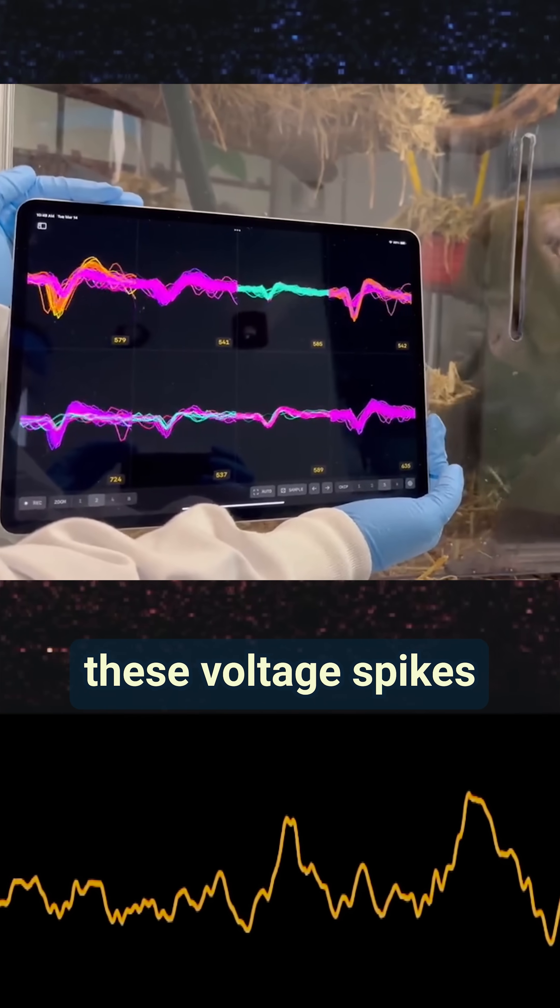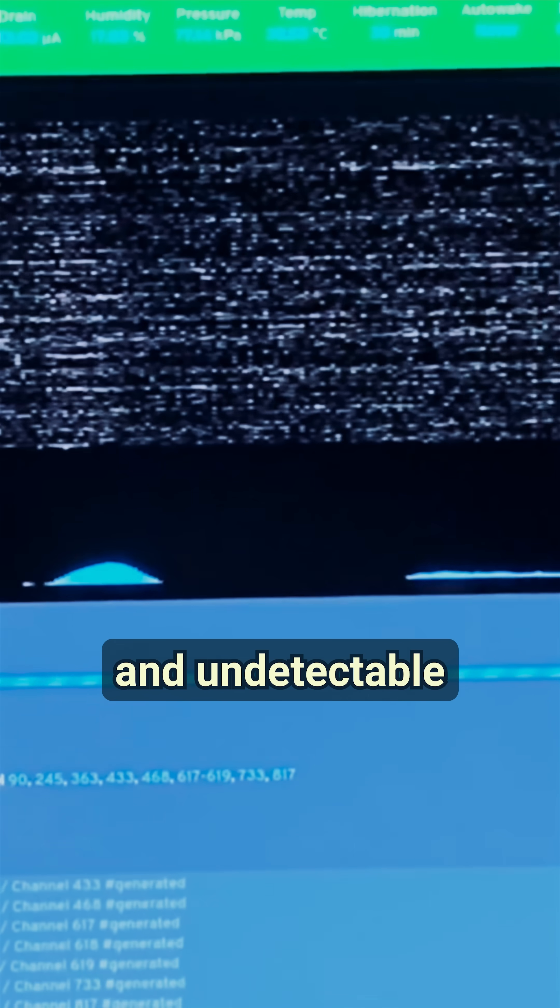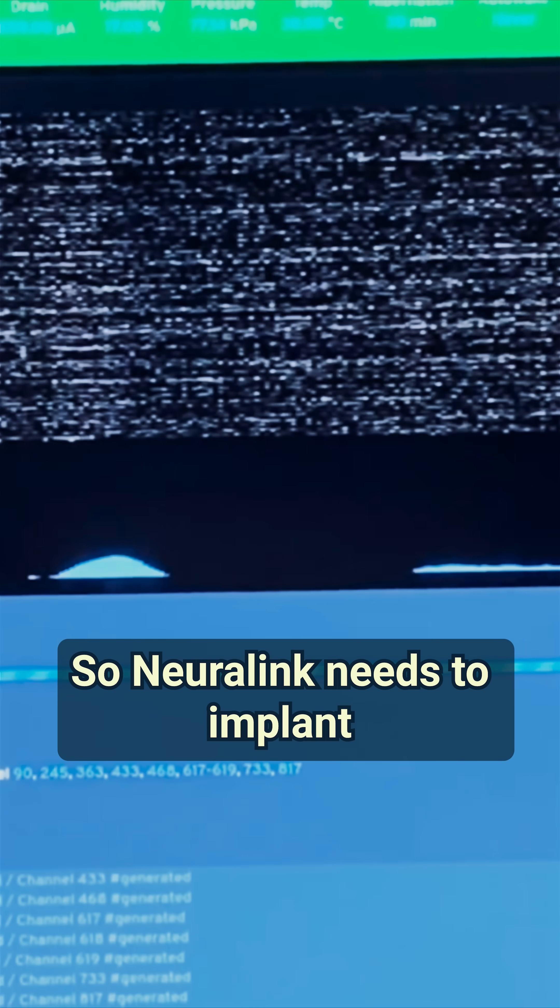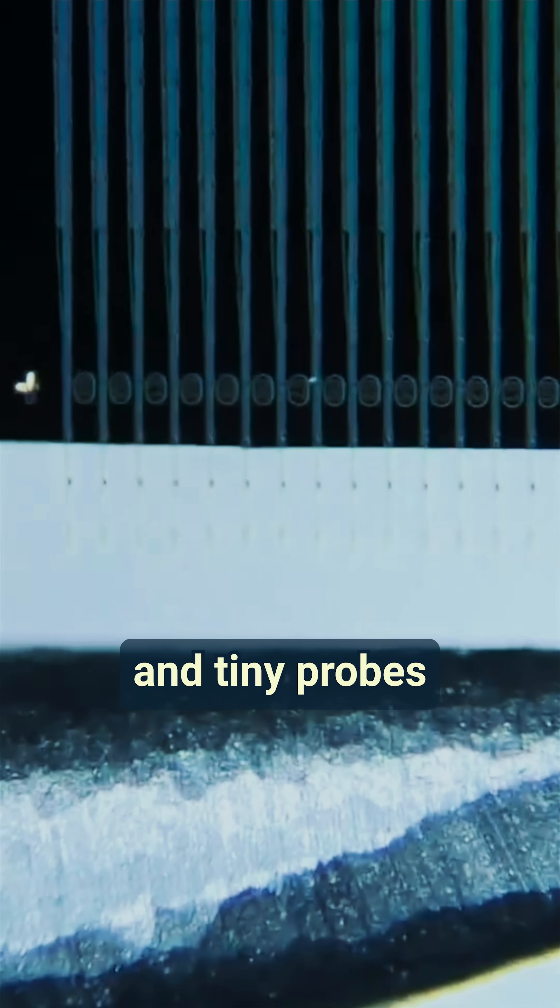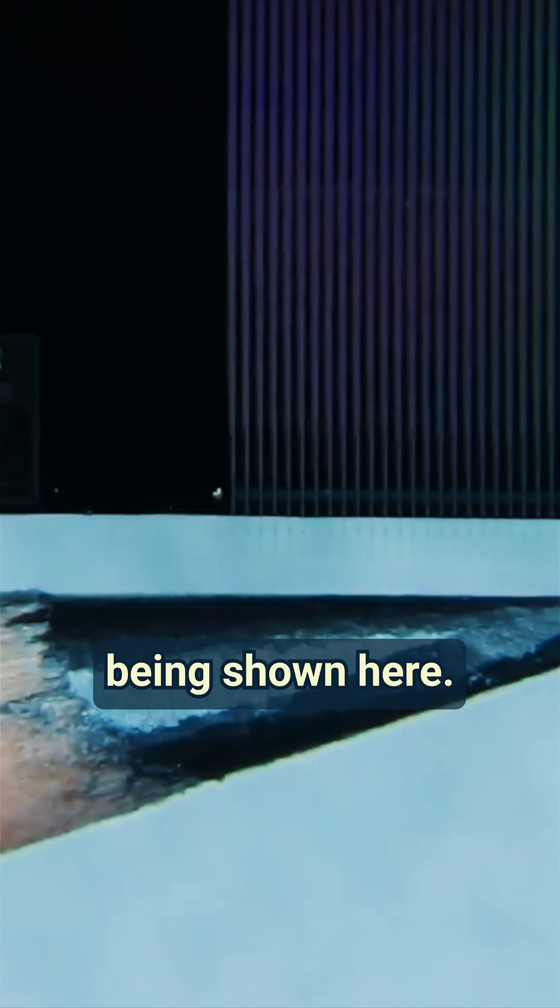And as you might imagine, these voltage spikes are extremely tiny and undetectable by any of us. So Neuralink needs to implant these very thin and tiny probes that can detect that electrical activity. That's what's being shown here.